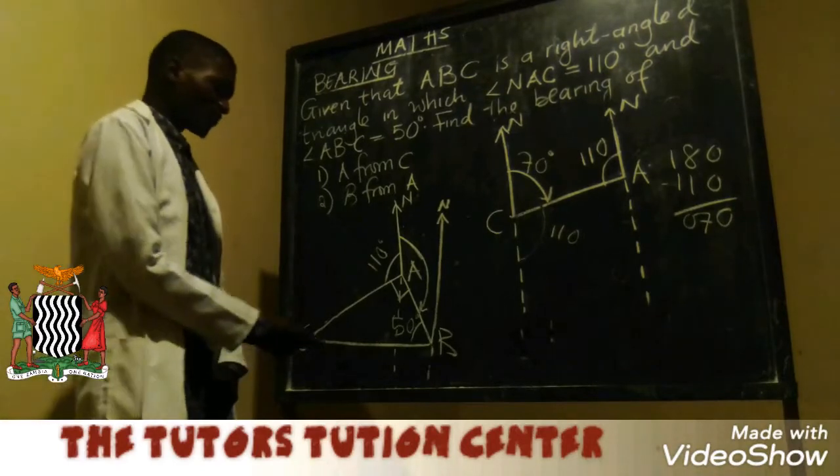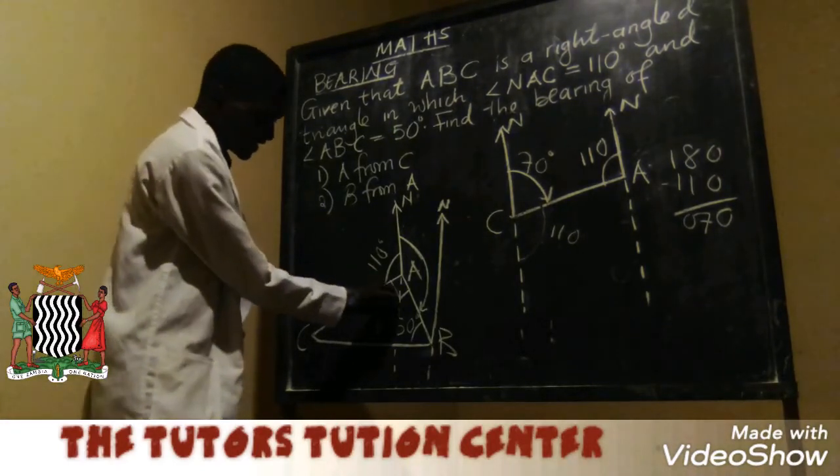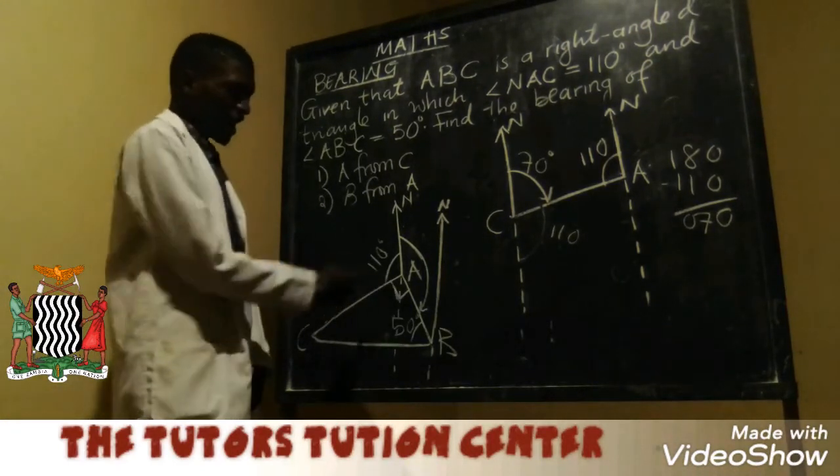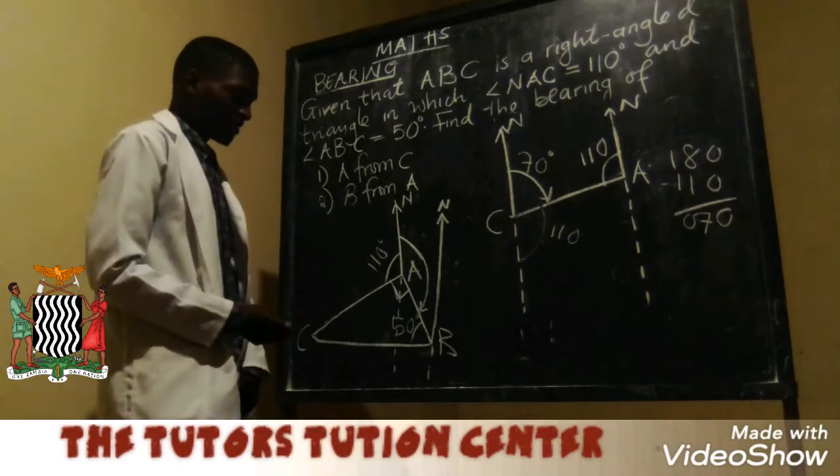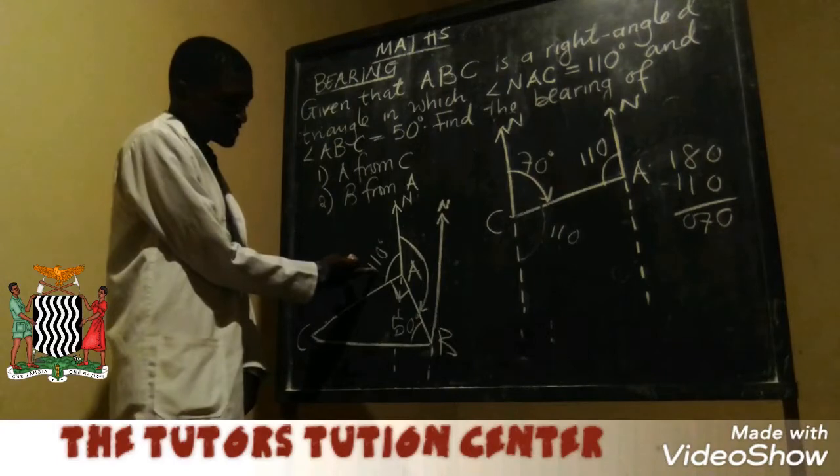For us to find this angle, since we are going to say this is 90 and this is 110, what we can do is when you add 90 and 90.